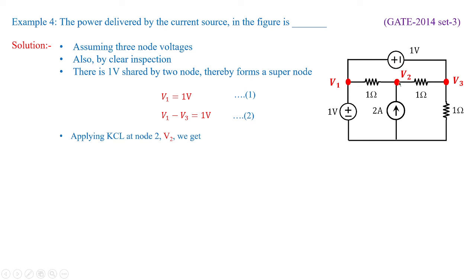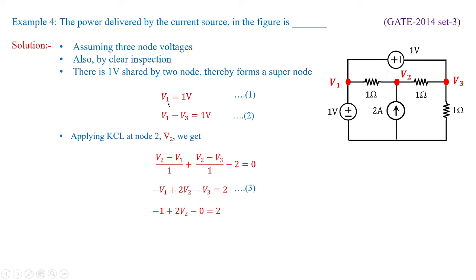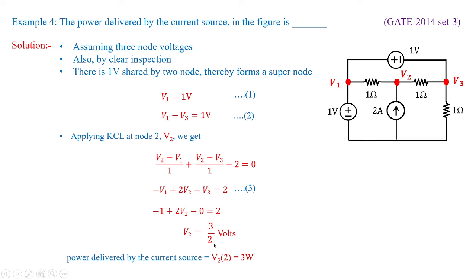Applying KCL at node V2: (V2 minus V1) by 1 plus (V2 minus V3) by 1 minus 2 equals 0. Substituting V1 equals 1 and V3 equals 0: 1 plus 2V2 equals 2, so V2 equals 3/2 volts. The power delivered by the current source is V2 multiplied by 2 amperes, which is 3/2 times 2 equals 3 watts. The power delivered by the current source is 3 watts.